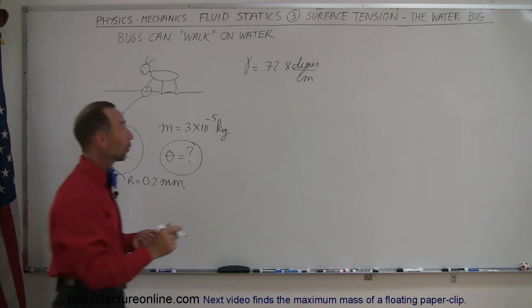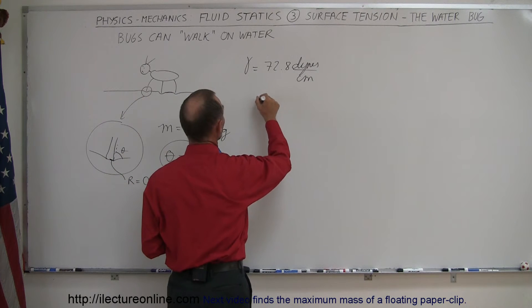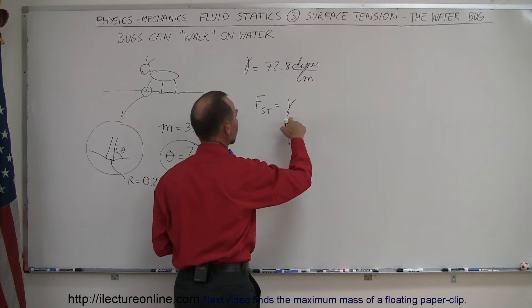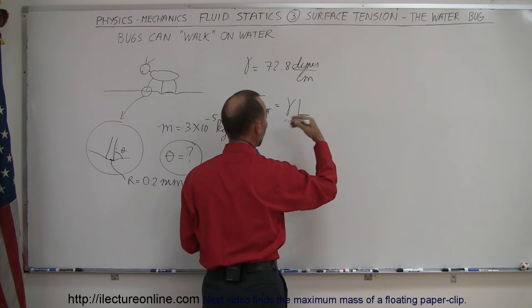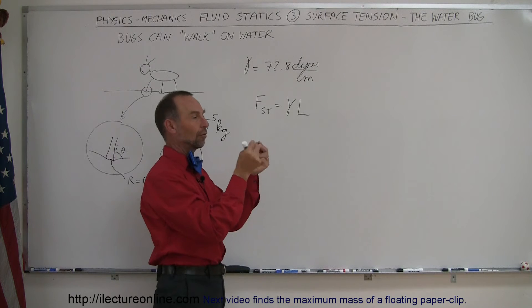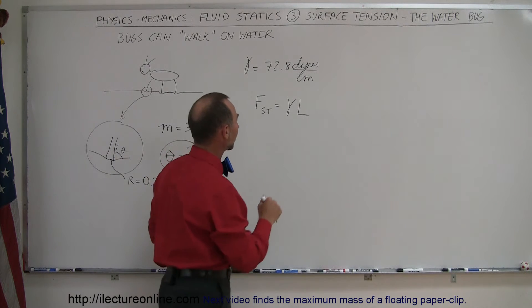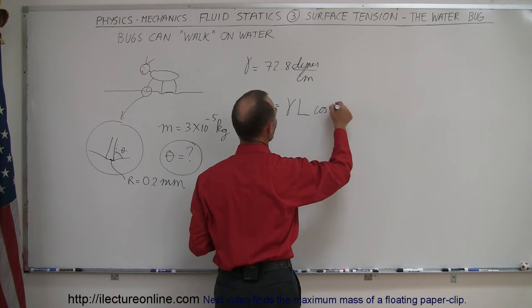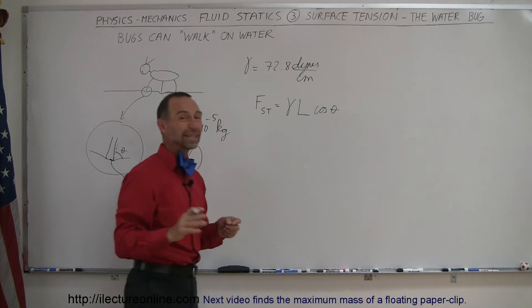The equation is that the surface tension has to be equal to the coefficient of surface tension times the length, the total length of the edge of the feet resting on the water, times the cosine of the angle theta. So we don't know what the angle is.